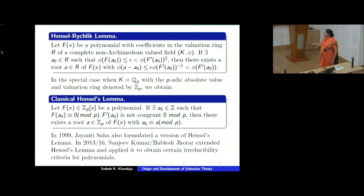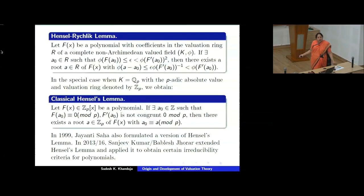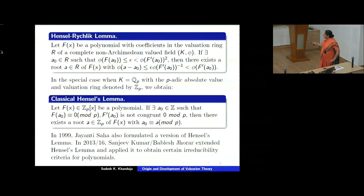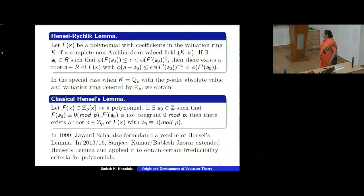In 2016, another reformulation of Hensel's lemma appeared in Manuscripta Mathematica — actually proved in 2015. The title of the paper is 'Another reformulation of Hensel's lemma and theorem of index of Ore.' This new version of Hensel's lemma was also applied to obtain certain irreducibility criteria for polynomials with coefficients in valued fields.